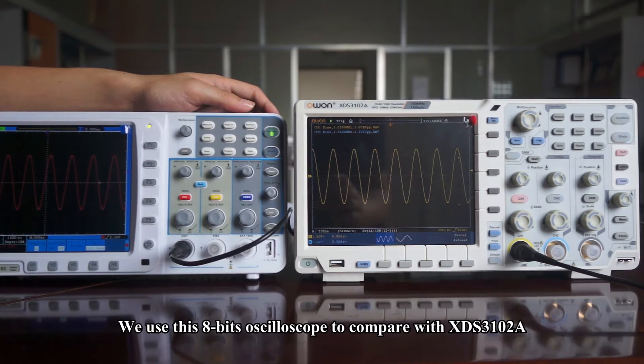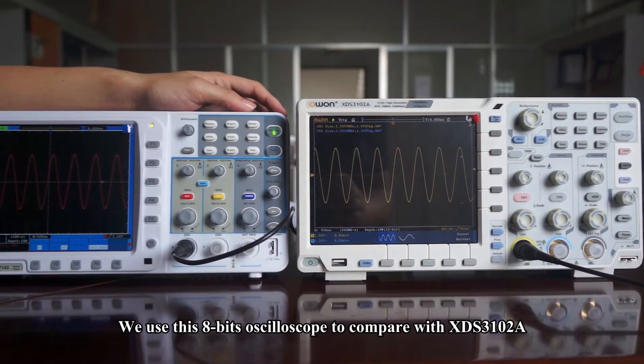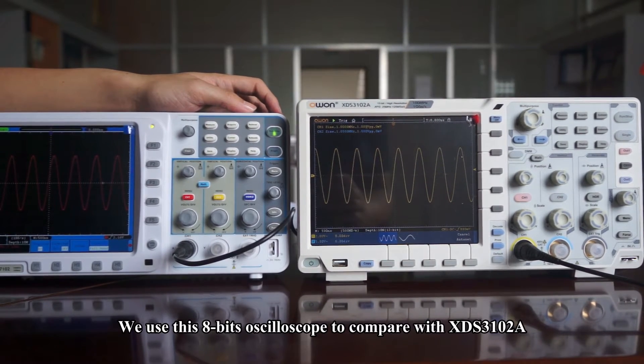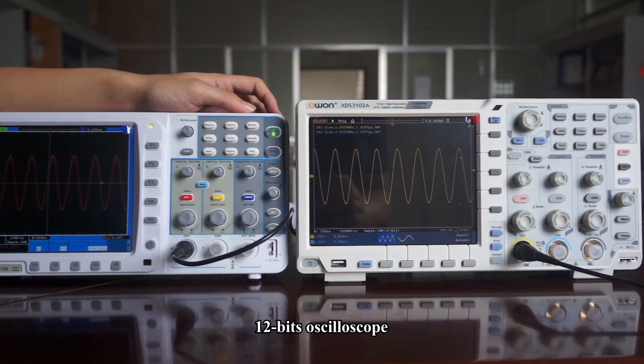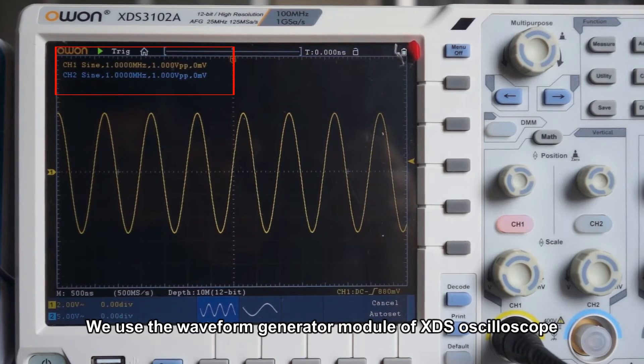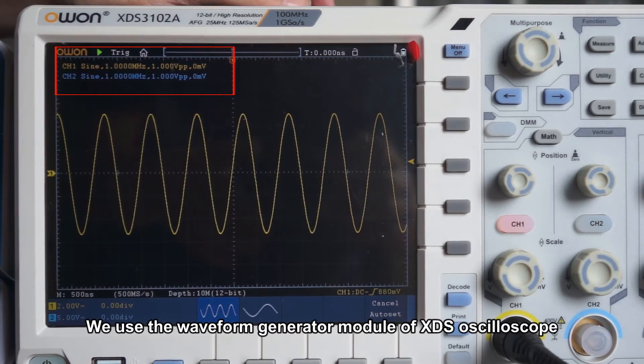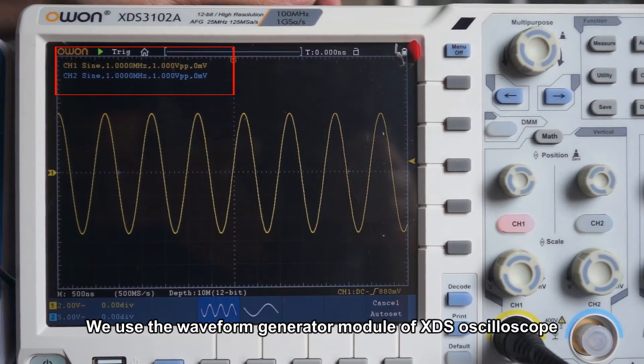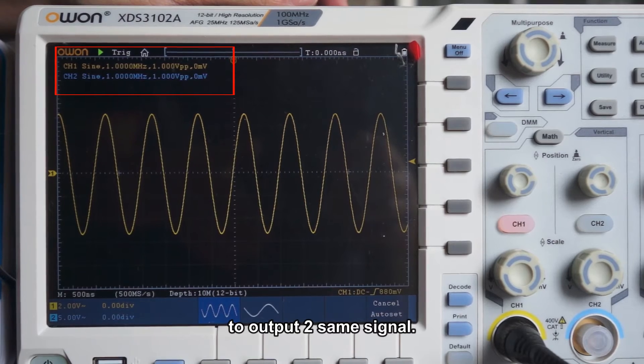Take a test. First, we use this 8-bit oscilloscope to compare with XDS3102A 12-bit oscilloscope. We use the waveform generator module of XDS oscilloscope to output two same signals.